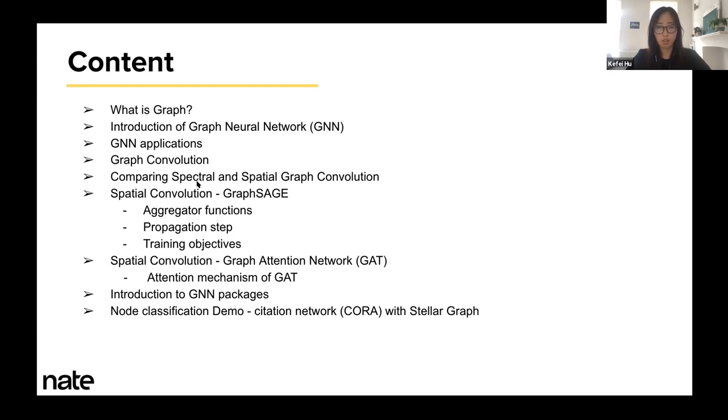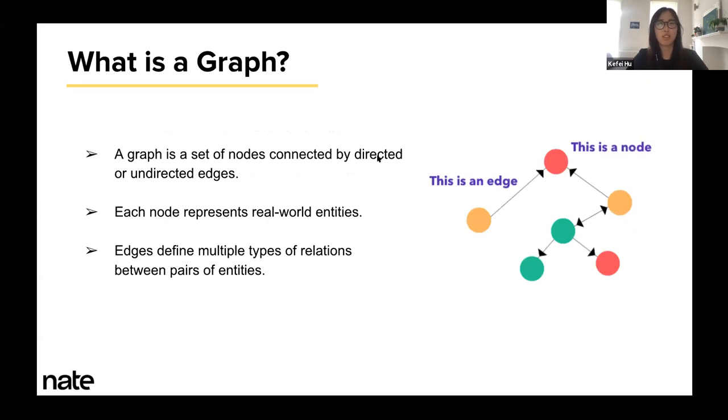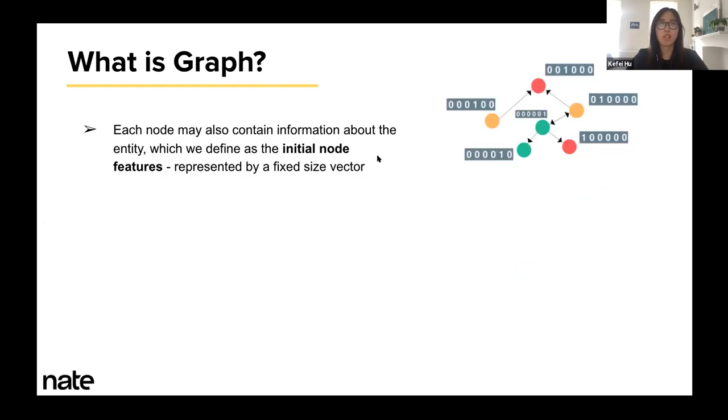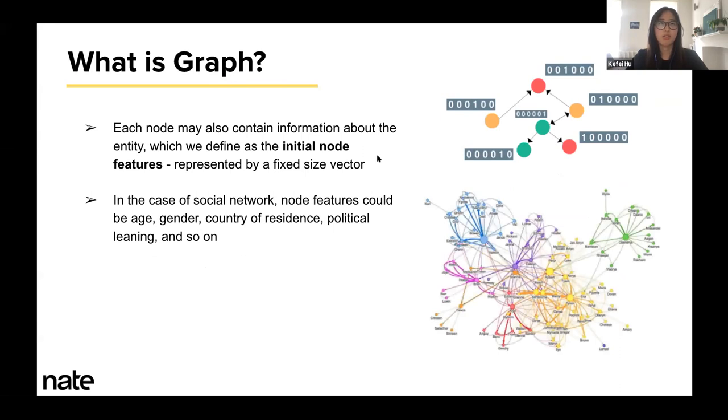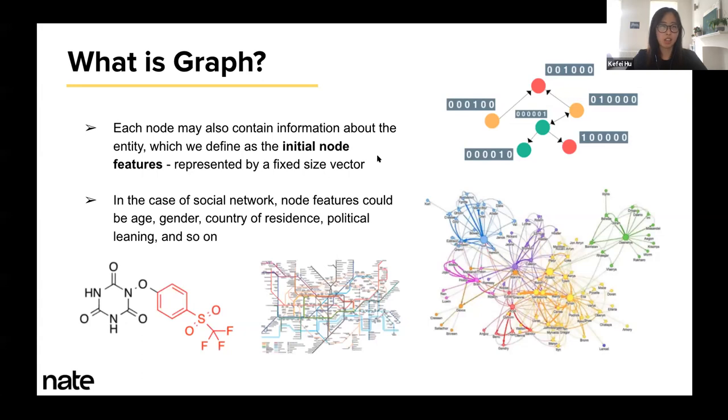So first, what is a graph? A graph is a set of nodes connected by directed or undirected edges, where each node represents real world entities and an edge defines a certain type of relationship between a pair of entities. Moreover, each node may contain information about the entity, which we define as the initial node features, and usually they are represented by a fixed size vector. In the case of social network, nodes represent users and node features can be personal attributes like age, gender, locations, and so on. But besides a social network, there are many other types of data that can be represented as graph, like molecules or transportation networks.